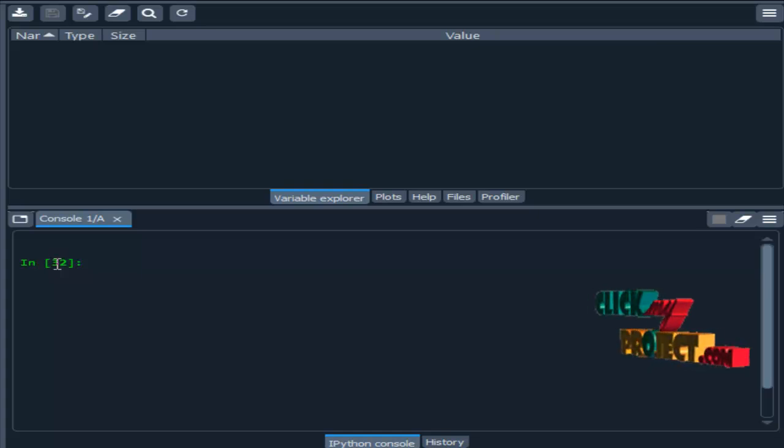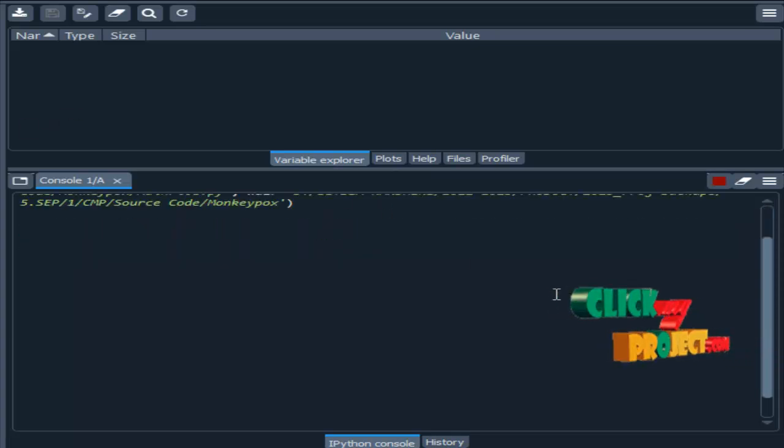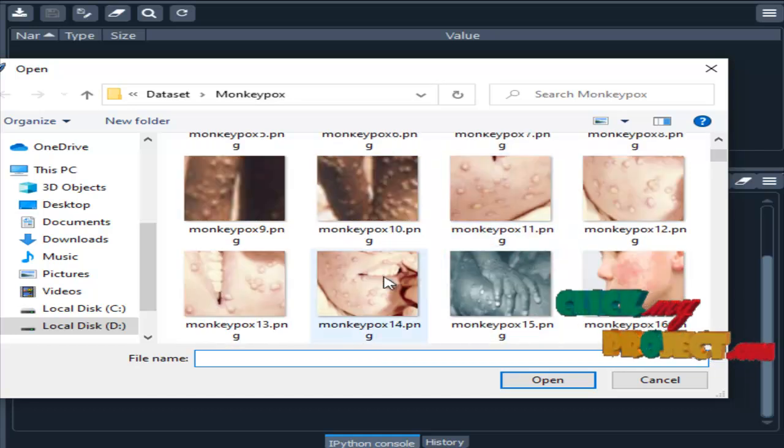Then, we are going to discuss the demo of our project. We are going to run our project in Spider IDE from Anaconda Navigator. First, we need to choose an input image from the dataset.